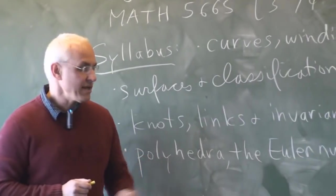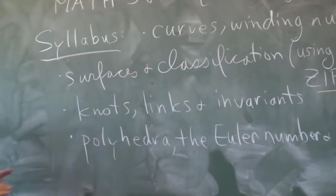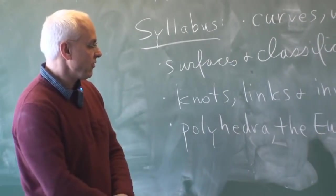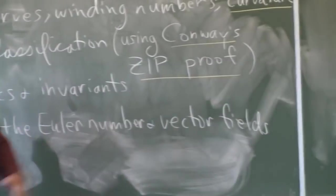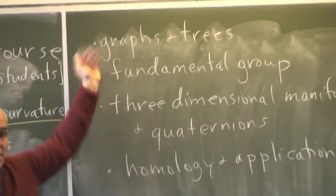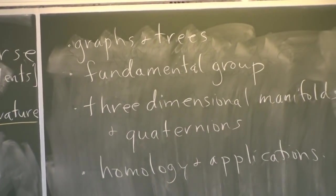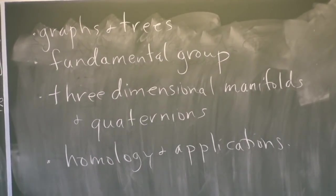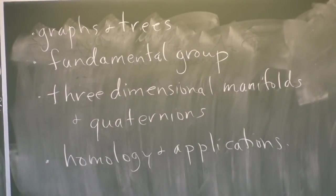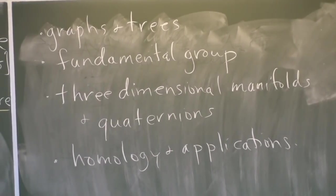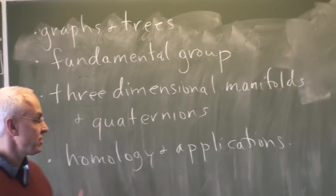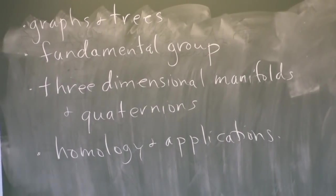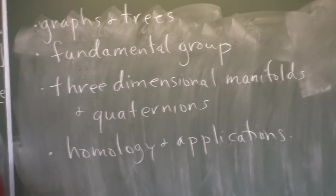We'll talk a little bit about knots and links and invariants of those. There are many invariants, but we'll just treat some simple ones. Then we're going to go back to a subject which is much earlier historically, the polyhedra, the Euler number, and vector fields. We're going to make some contact with graph theory, the topological aspects of graph theory, and talk about trees. We're going to talk about the fundamental group of a surface or a topological space, which was introduced by Poincaré. And then we'll eventually get to talking about three-dimensional manifolds. We'll take the step up from two-dimensional surfaces to three-dimensional manifolds, which is much harder. But we're going to have a good look at the most fundamental three-dimensional manifold, which is the three-sphere. It's a very rich object of study and naturally connected with quaternions. And then we're going to also hopefully talk a little bit about homology and applications.